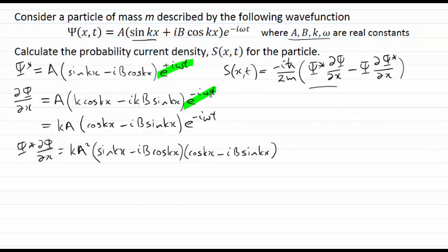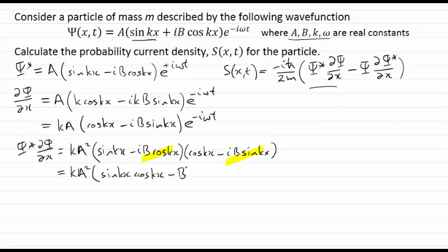Working through and expanding this bracket: looking at the first terms, I get a cross term sine kx times cosine kx. Looking at the second terms multiplied through, I also get cosine kx times sine kx, and minus ib times minus ib gives minus b², so I get minus b² sine kx cosine kx. Then the inner and outer terms give minus ib sine² kx and minus ib cosine² kx. So there are the four terms when I expand that bracket.